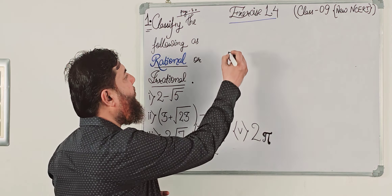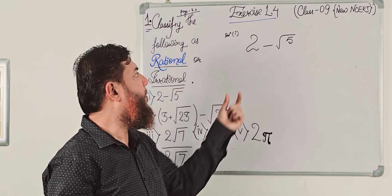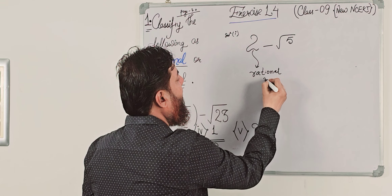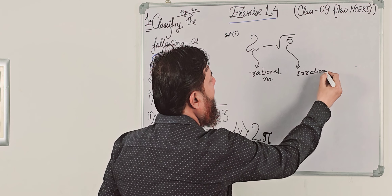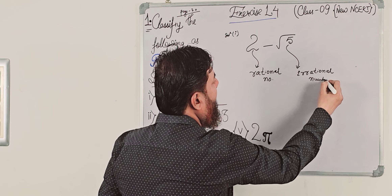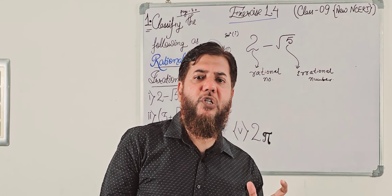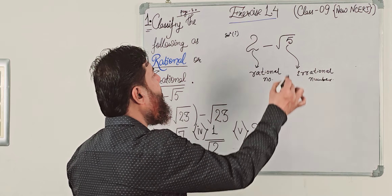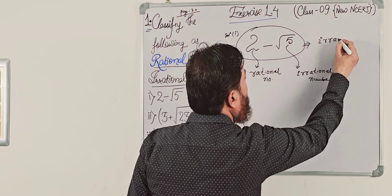The solution of question number 1: we are looking at 2 minus root 5. As you see here, there are two parts. The first part, 2, is a rational number. The second part, root 5, is an irrational number. From the properties, when a rational number is added or subtracted with an irrational number, the result is irrational. So 2 minus root 5 is an irrational number.